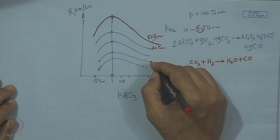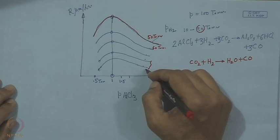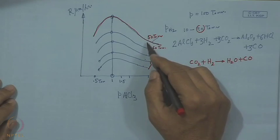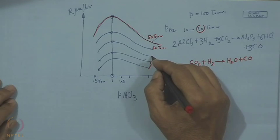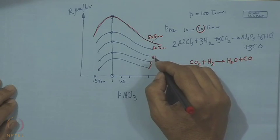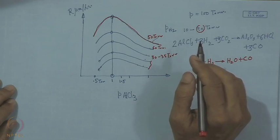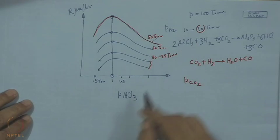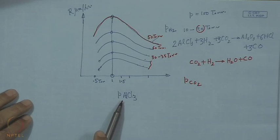The two extreme curves (P(H₂) very low or very high) give low yield, while the curve near 50% of total pressure gives the highest growth rate. This is the expected behavior during CVD of Aluminium Oxide: growth rate versus partial pressure of AlCl₃.